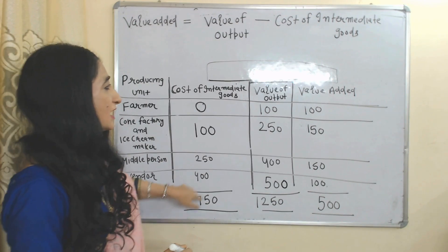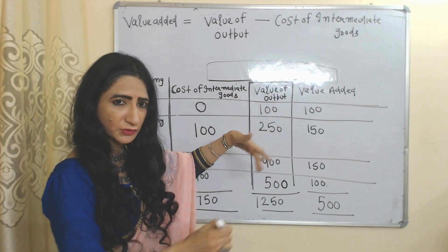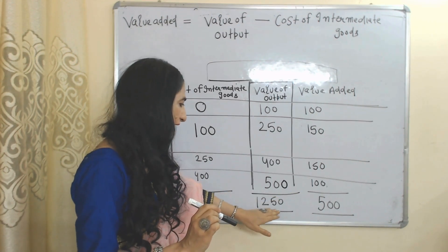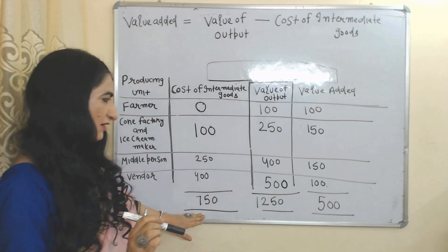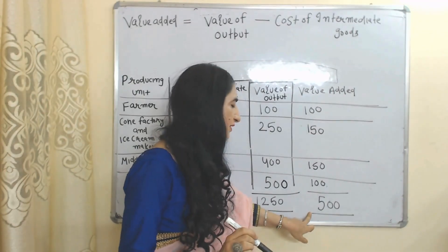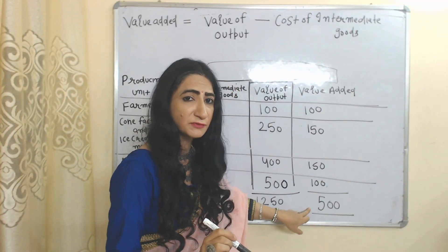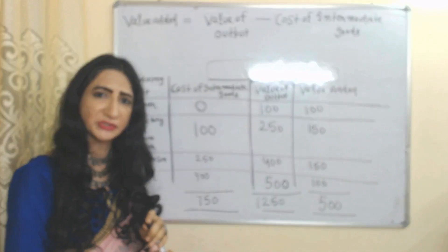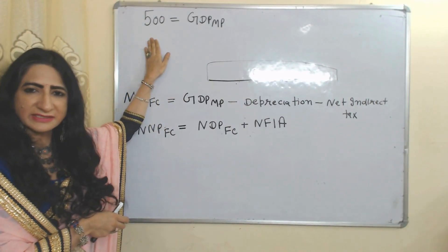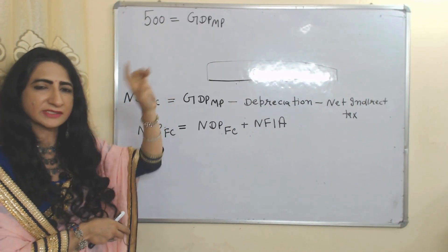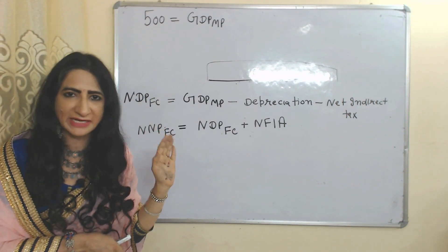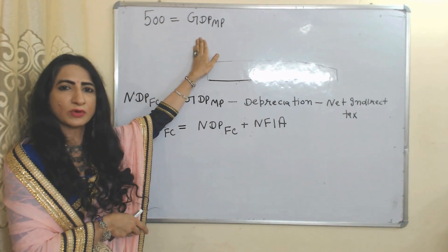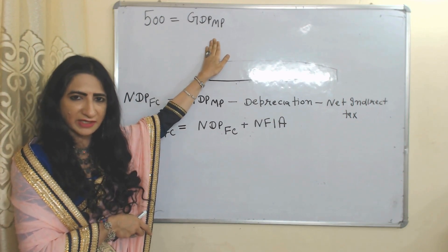The total cost of intermediate goods for all producing units is 750, and the total value of output is 1250. When we subtract 750 from 1250, it becomes 500. This 500 is the sum total of value added by each producing unit, and it is equal to Gross Domestic Product at market price.